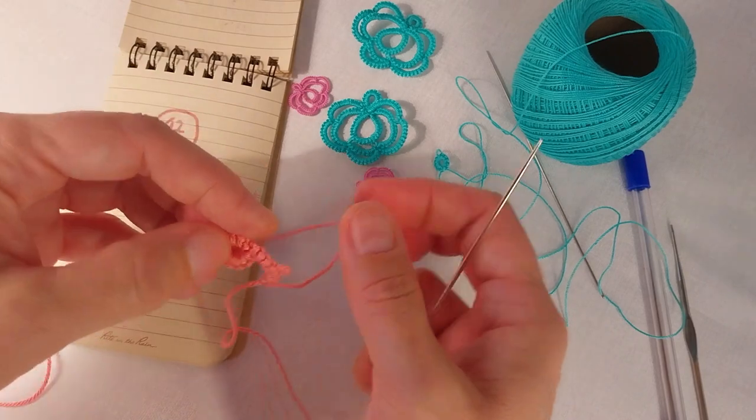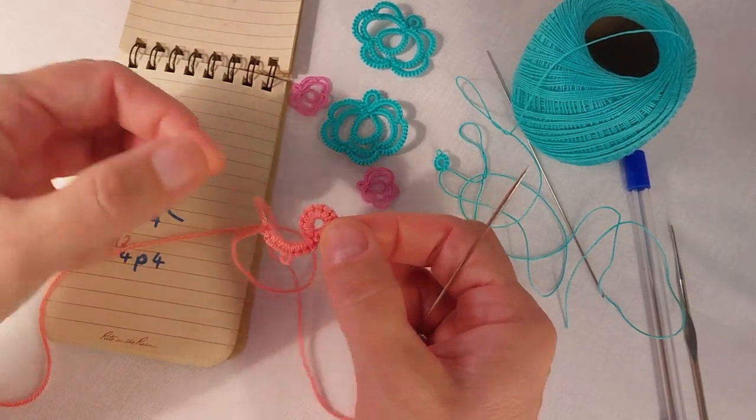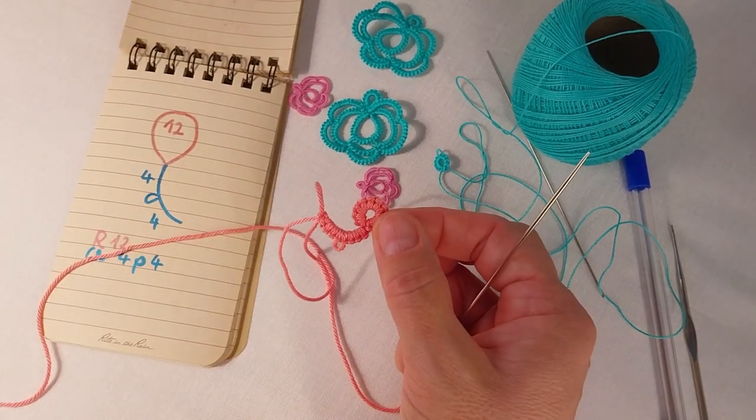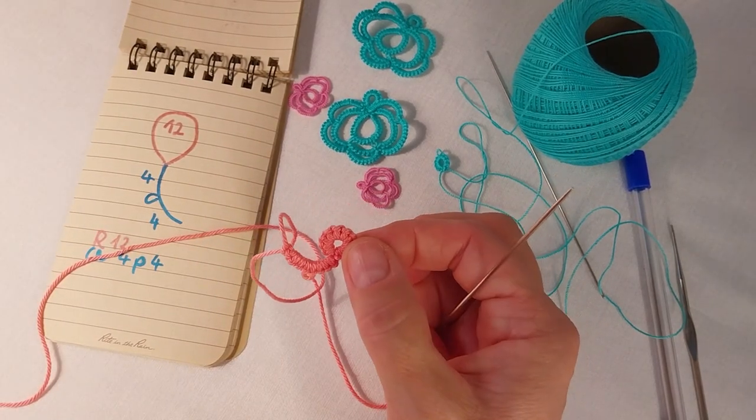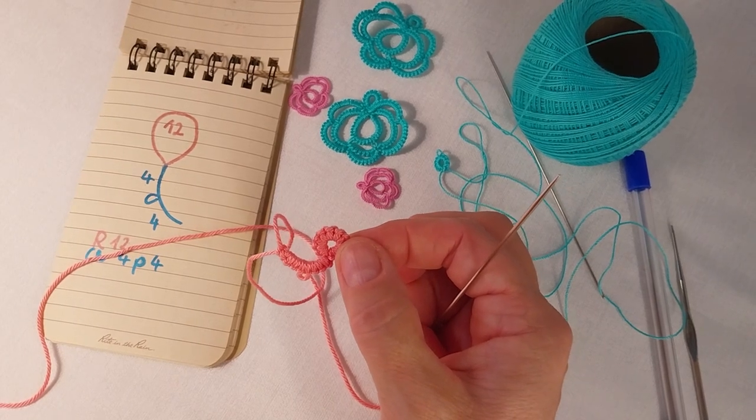And with it, a ring of 12 stitches and a chain of 4 stitches, a picot, and 4 stitches. If you like my video please sign up and follow the other ones. Thank you very much. See you soon.